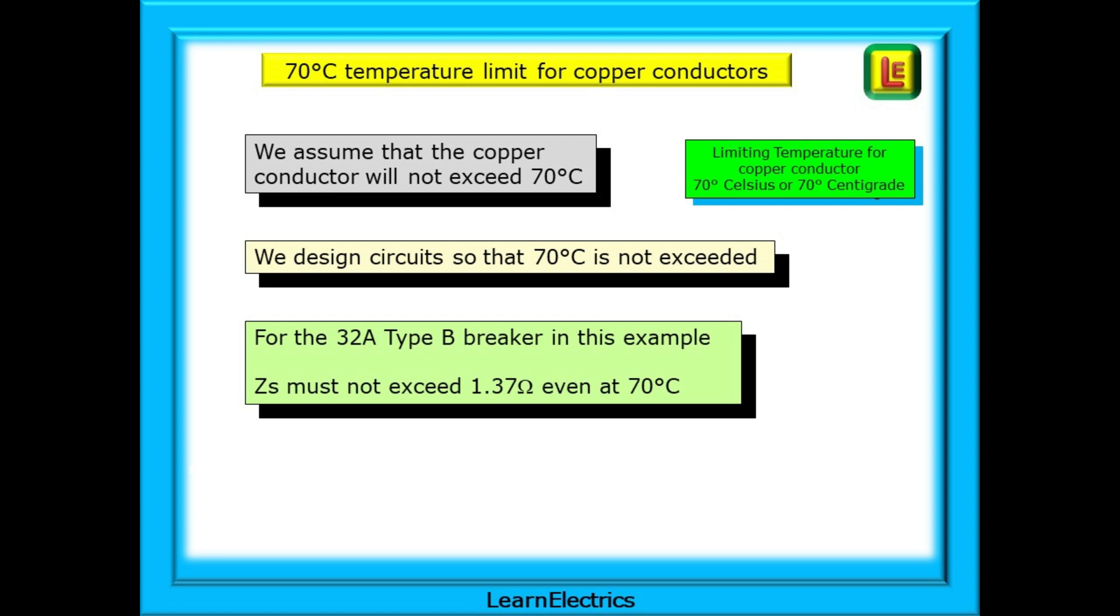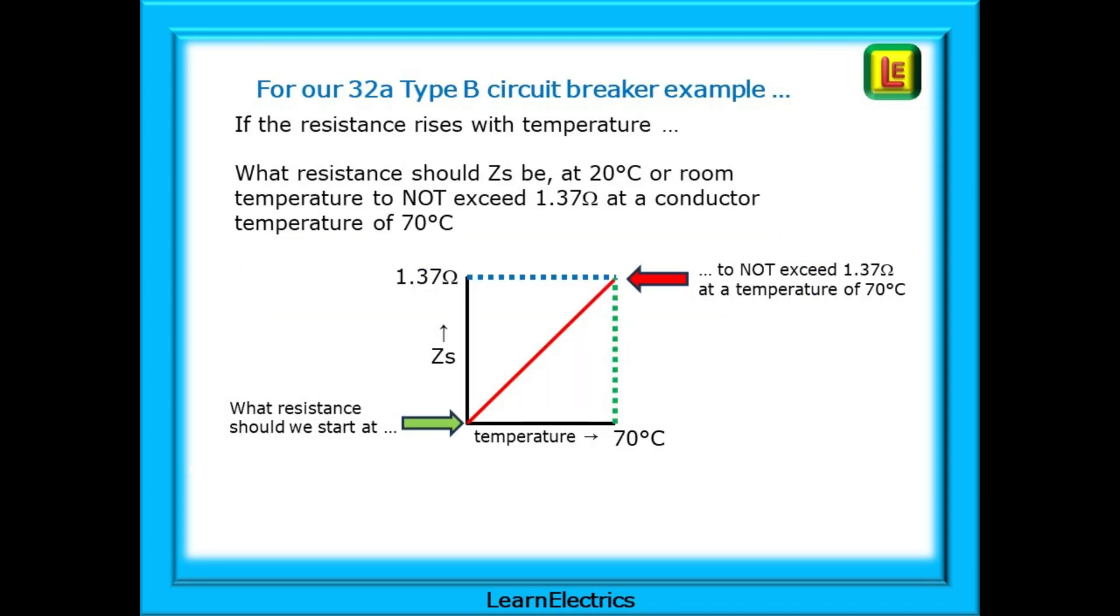Let's say that we measure our circuit and the ZS that we measure is already at the maximum of 1.37 ohms and we are at room temperature of about 20 degrees normal temperature conditions. We know that as soon as the temperature of the cable increases either because of ambient temperature changes, excessive currents, grouping of cables and so on the resistance, the ZS is going to go up. If resistance goes up our 160 amps is going to go down. We are not going to meet the required disconnection times.